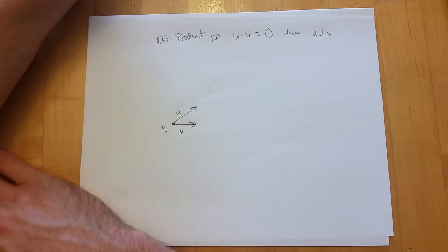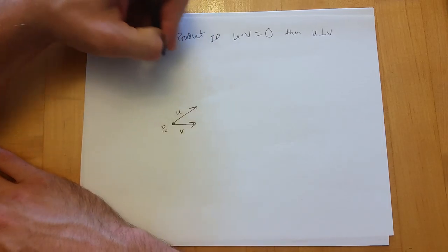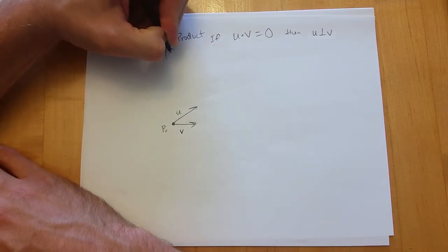The way I think about planes uses the dot product. If u dot v equals zero, then u is perpendicular to v. Any two vectors whose dot product is zero are perpendicular. Remember the dot product: you multiply corresponding entries together and add them up.